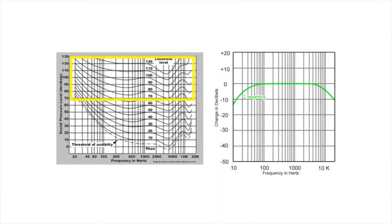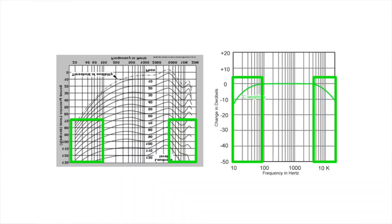For a higher volume, such as program audio applications, you would use C weighting. Just like your hearing at louder volume levels, the C weighting is a flatter curve. Flip the loudness contours upside down, and you can see the C weighting follows the shape of the upper curves. It attenuates the very low and high frequencies but leaves the mid-range alone.